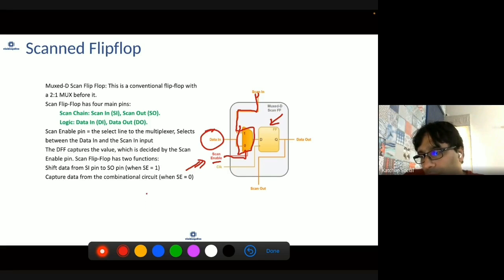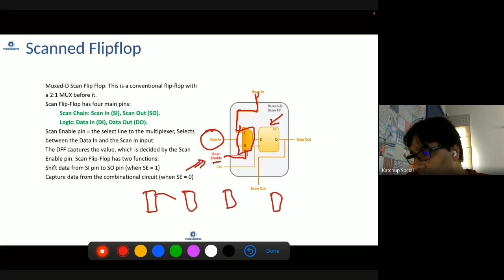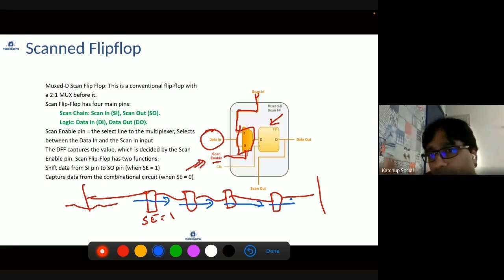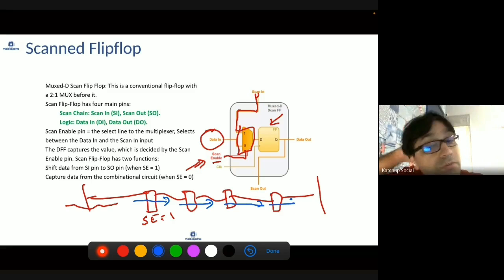What you can do is, you can put all these flops in a chain. Let's say when you set scan enable to be 1, and you connect it to the primary input or output, when scan enable is 1, whatever value you pass on here, it will go to next flop, go to next flop after each cycle, and you can basically put whatever value you want to put on each of these flops. All of these flops become controllable and observable.